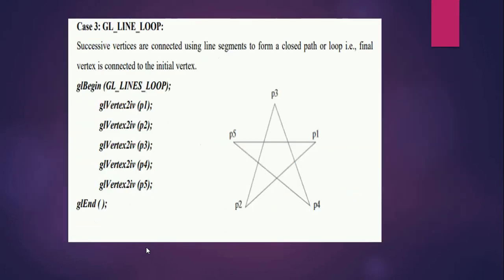GL_LINE_LOOP also connects successive vertices using line segments, but here the final vertex is connected back to the initial vertex to form a closed path or loop. Using the same program with the primitive changed to GL_LINE_LOOP, p5 will be connected back to p1, producing a closed star-like structure.